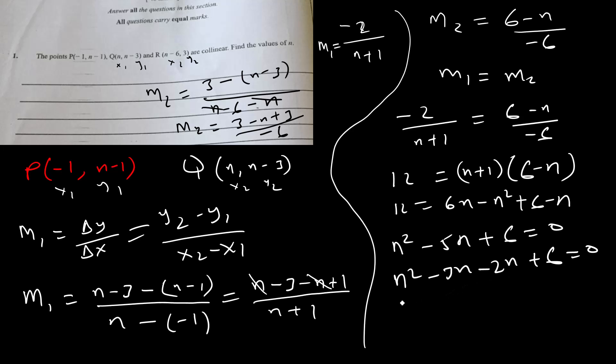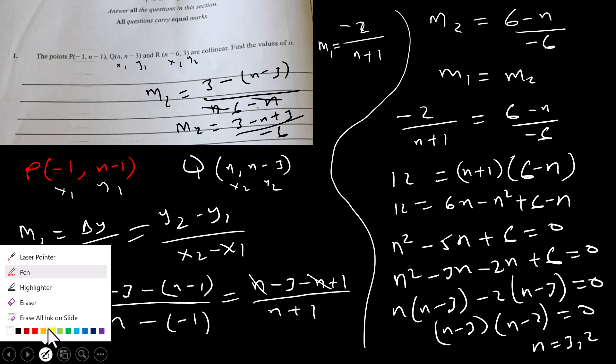Factoring the quadratic: (n - 3)(n - 2) equals 0. Therefore n equals 3 or 2. So the possible values for n here are n equals 3 or 2.